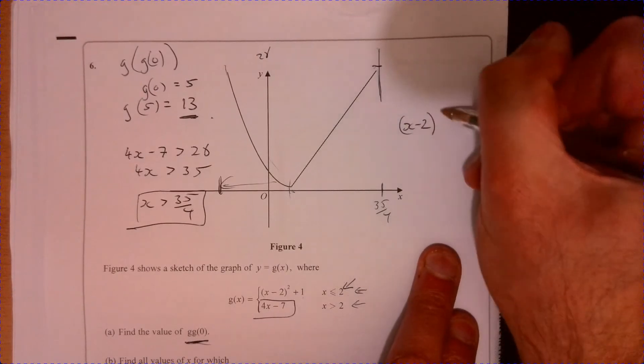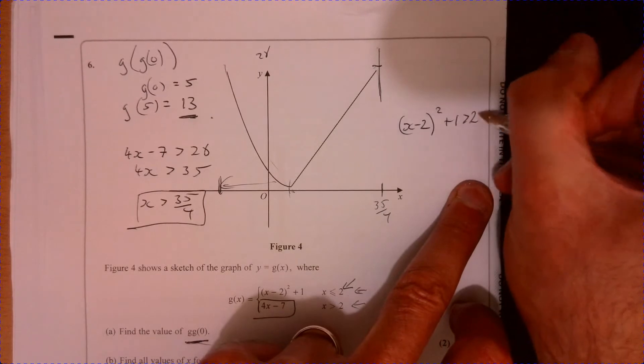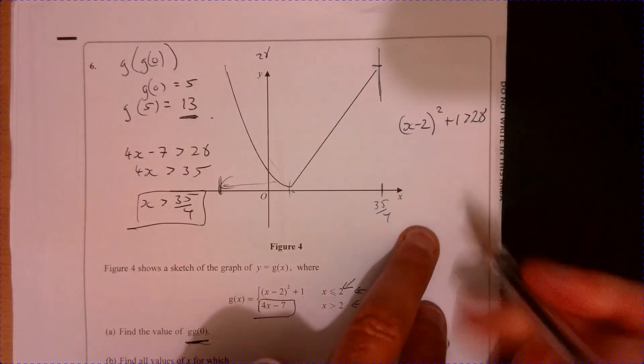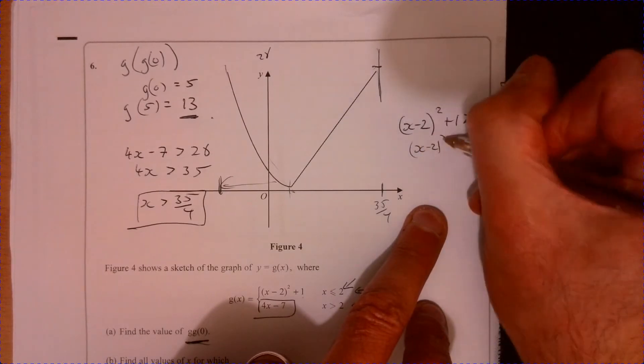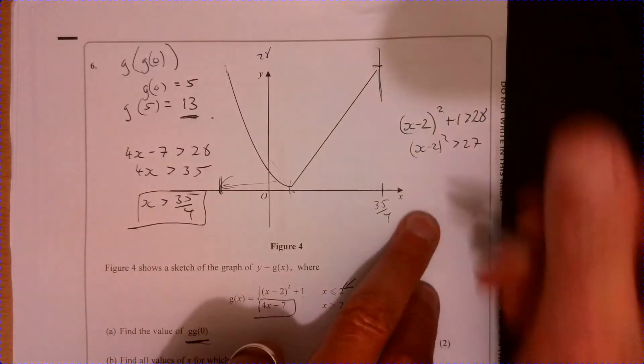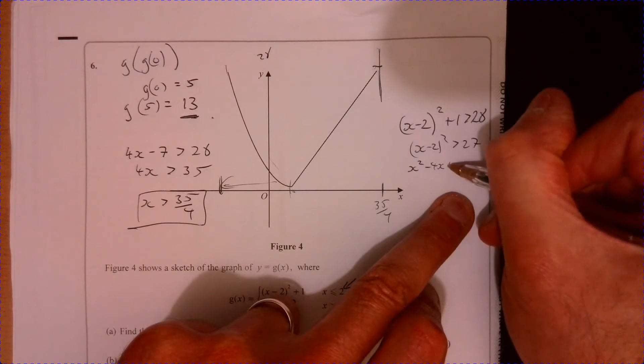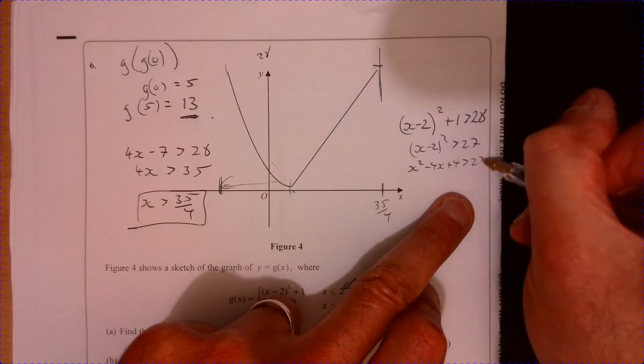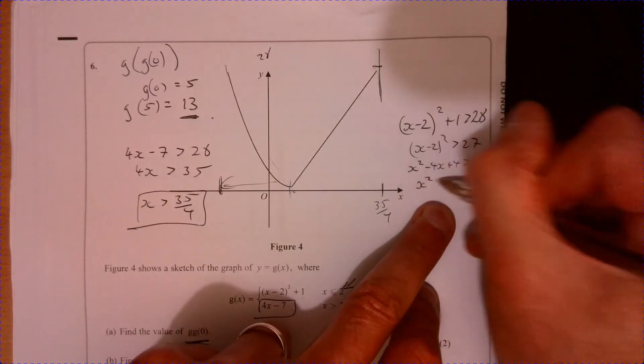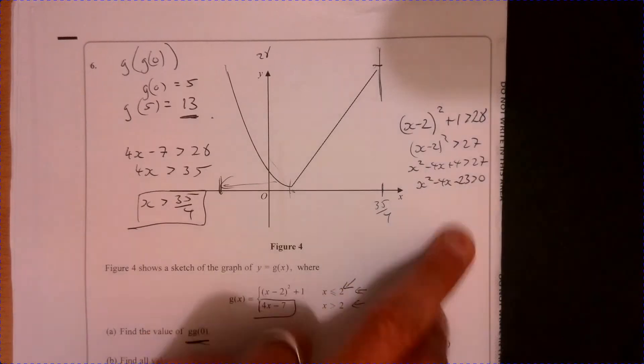So we've got x minus two squared plus one, and we're interested in when that's going to be more than 28. So take away one from both sides. So x minus two squared has to be more than 27. Let's multiply that out. So x squared minus 4x plus four is more than 27. Take away 27 from both sides. So x squared minus 4x minus 23 has to be more than zero.